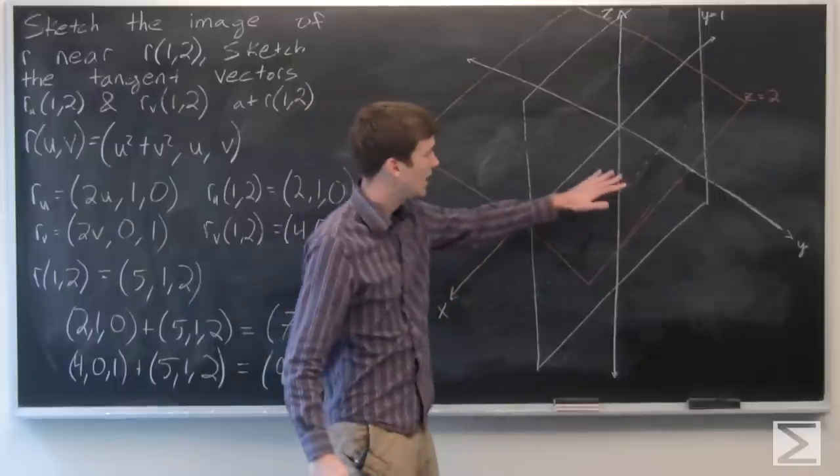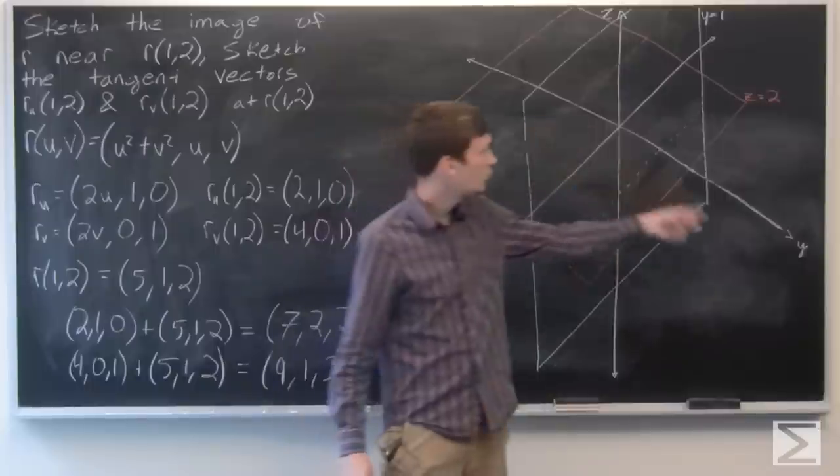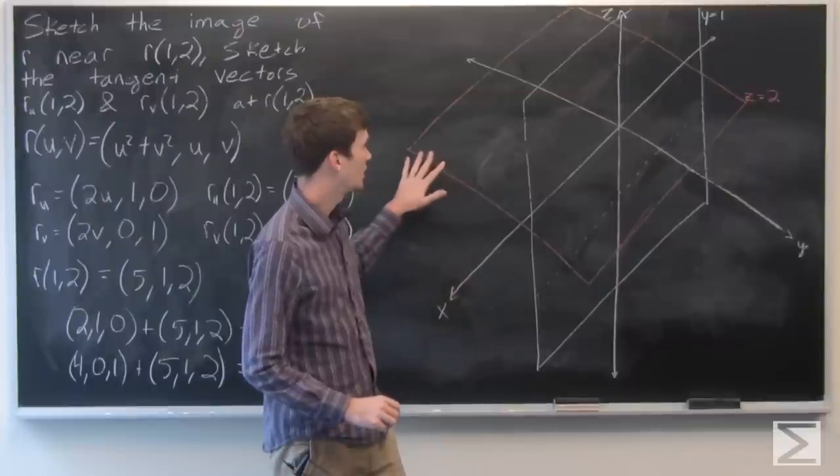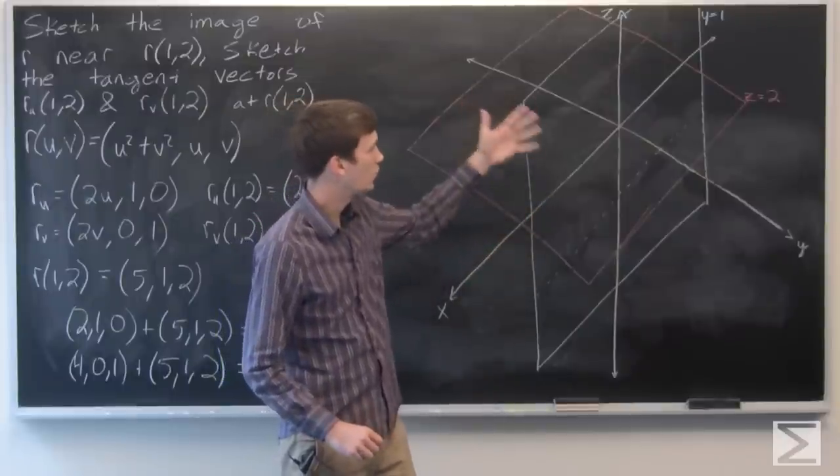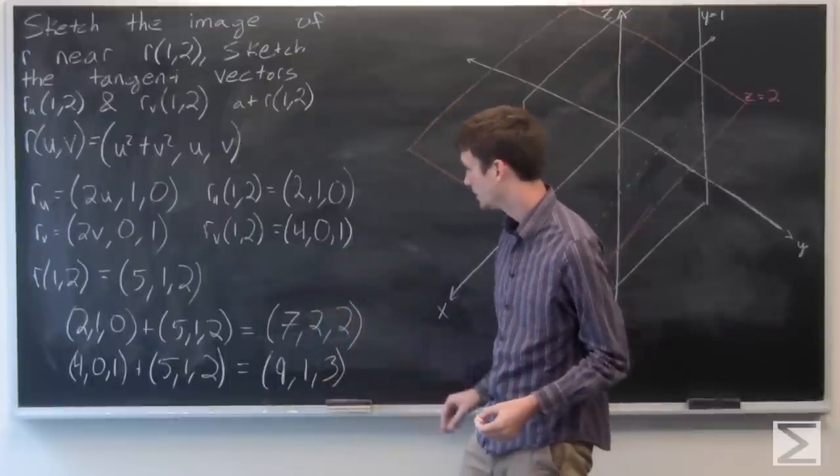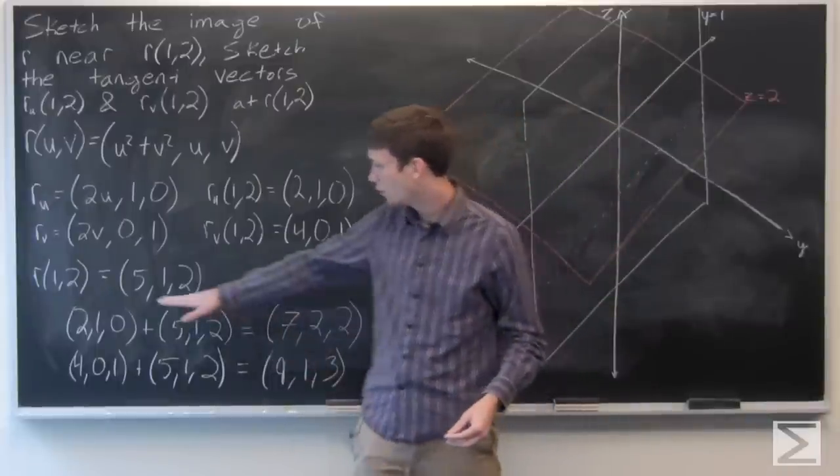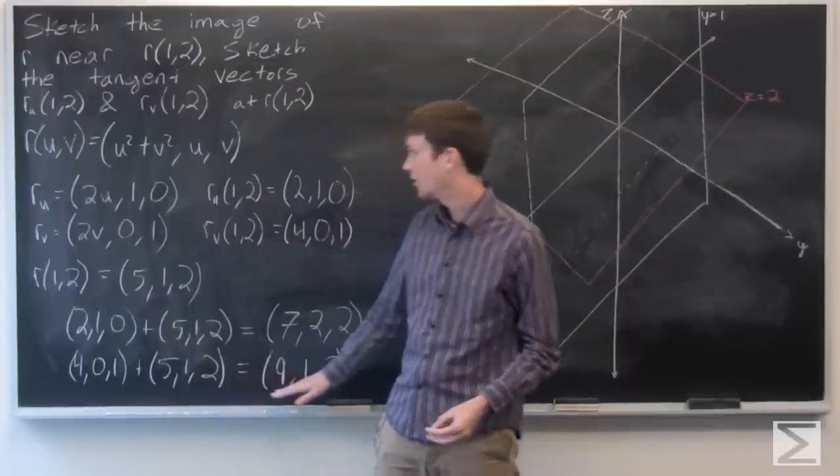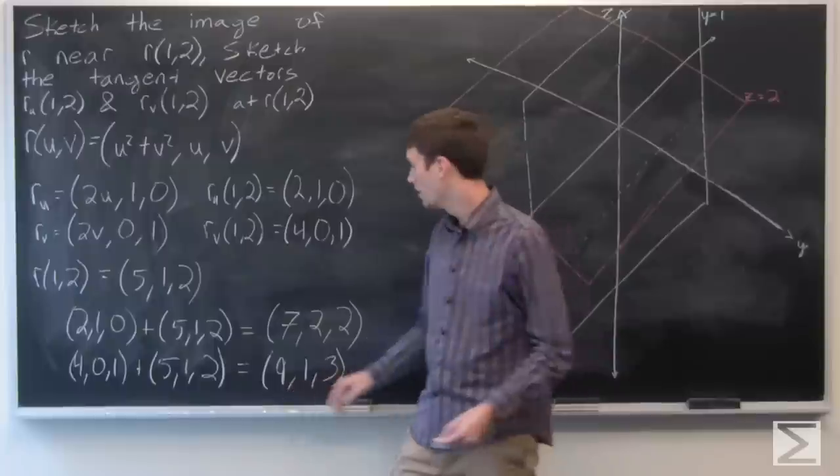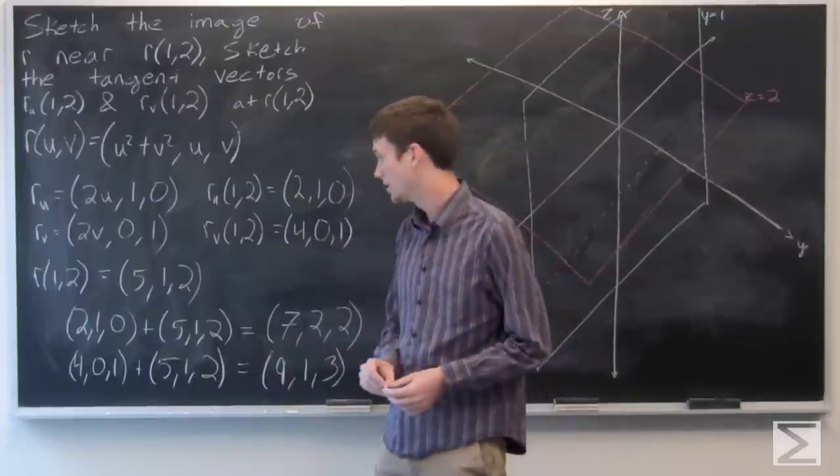I've already drawn the axes, we have our x, y, and z axes. And I've also sketched for reference points the plane where z equals 2 and the plane where y equals 1. When y equals 1, we're going to have both points r at (1,2) and r sub v, so this vector will be on the plane where y equals 1.